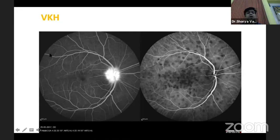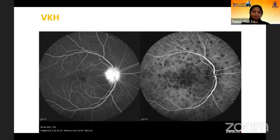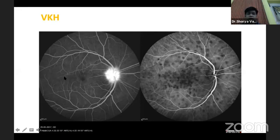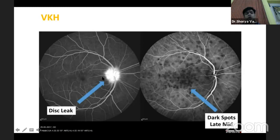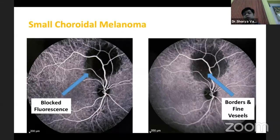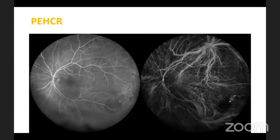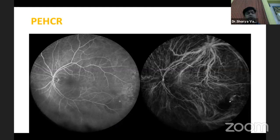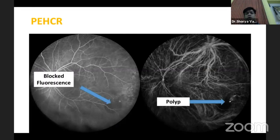In VKH, there is hyperfluorescence on fluorescein angiogram; however, on ICG we will not see this but will see dark spots in the late mid phase corresponding to choroidal hypoperfusion. In cases of choroidal tumors like a small melanoma, there may just be blocked fluorescence on FFA but the margins may be better seen on ICG. A peripheral lesion like peripheral exudative hemorrhagic retinopathy seen on wide-field angiography may show a sub-RPE bleed with a corresponding polyp on ICG.